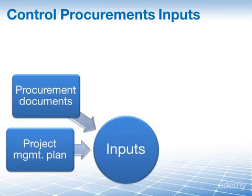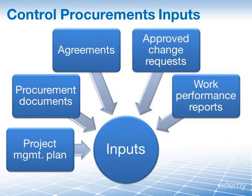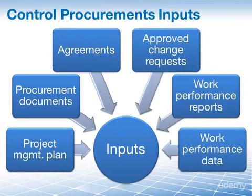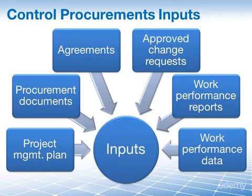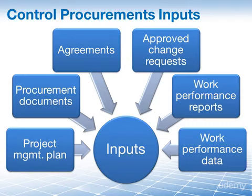The six inputs are: the project management plan, the procurement documents, agreements, approved change requests, work performance reports, and work performance data. Out of these six, there are two we will not look at in detail. The project management plan we need simply to access the procurement management plan, which describes the process of how we administer our procurements — defining step by step what we do in this process. We also won't look at the agreements in detail because, simply put, we need them so that we can control them.